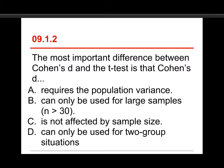The second question is, the most important difference between Cohen's d and the t-test is that Cohen's d A requires the population variance, B can only be used for large samples greater than 30, C is not affected by sample size, or D can only be used for two group situations. The answer to this one is C, that Cohen's d is not affected by sample size.